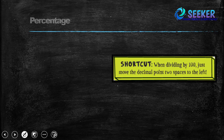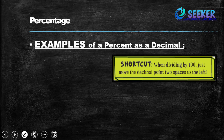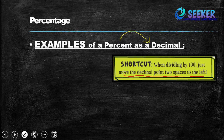Now, examples of percent as a decimal. How can we convert a percent into a decimal? We simply divide the given percent by 100, and for that we move the decimal point 2 spaces to the left. For example, 65 percent means 65 divided by 100, and if we divide this by 100 we get 0.65.